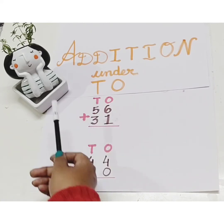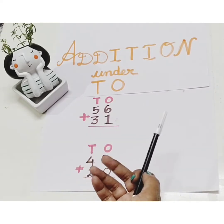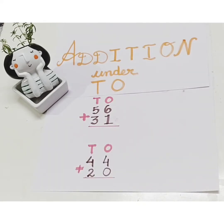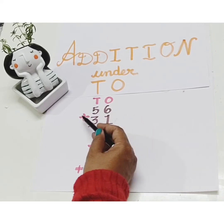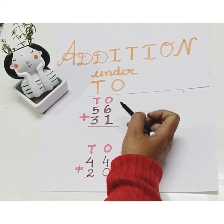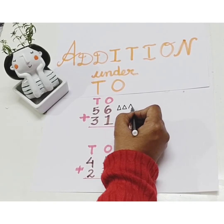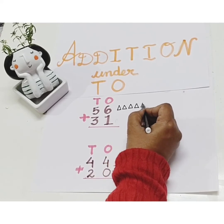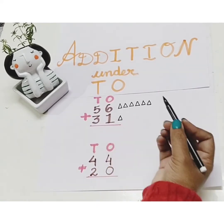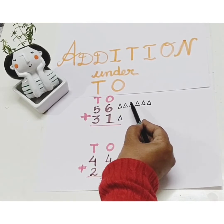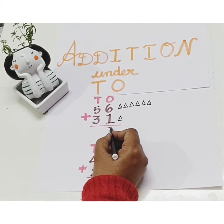Children, now let's do the next sum. Minnie has 56 triangles and someone gave her 31 more triangles. How many triangles does she have? First we will count the right hand side digits under ones. Let's count 6 plus 1. So first we will make six triangles: one, two, three, four, five, six, plus one triangle.